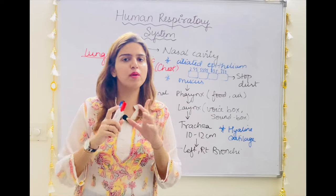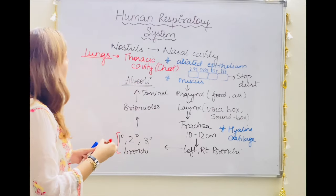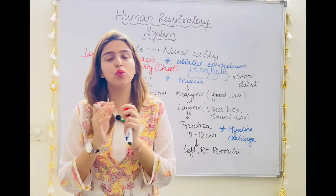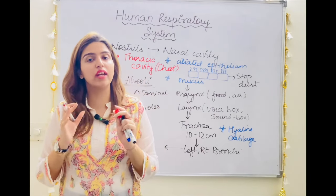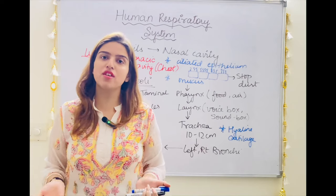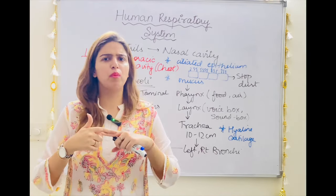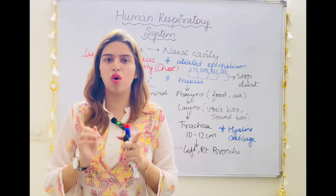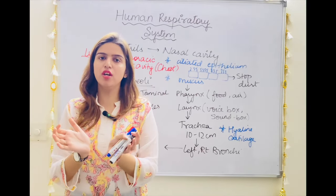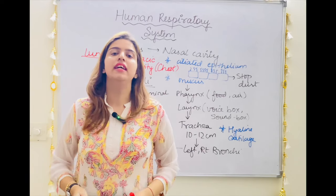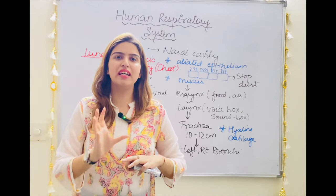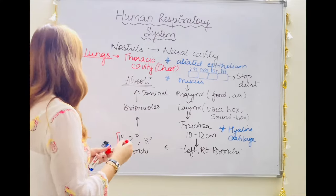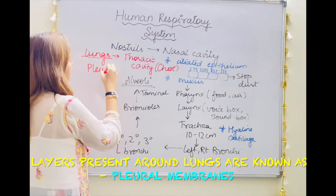The lungs need to be well protected — if the lungs get punctured the body cannot heal them. First they are kept inside a bony cover, the thoracic cavity. Additionally, around the lungs two layers are present. These layers around the lungs are called pleural membranes. There are two pleural membranes — one outer pleural membrane and one inner pleural membrane.